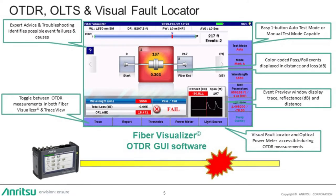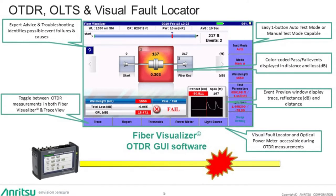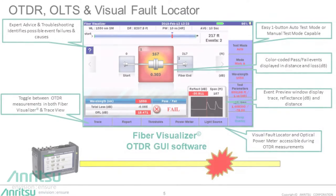Color-coded pass-fail events are labeled by the type of event icon, with the distance to the event located on top, and the amount of loss per event located on the bottom.